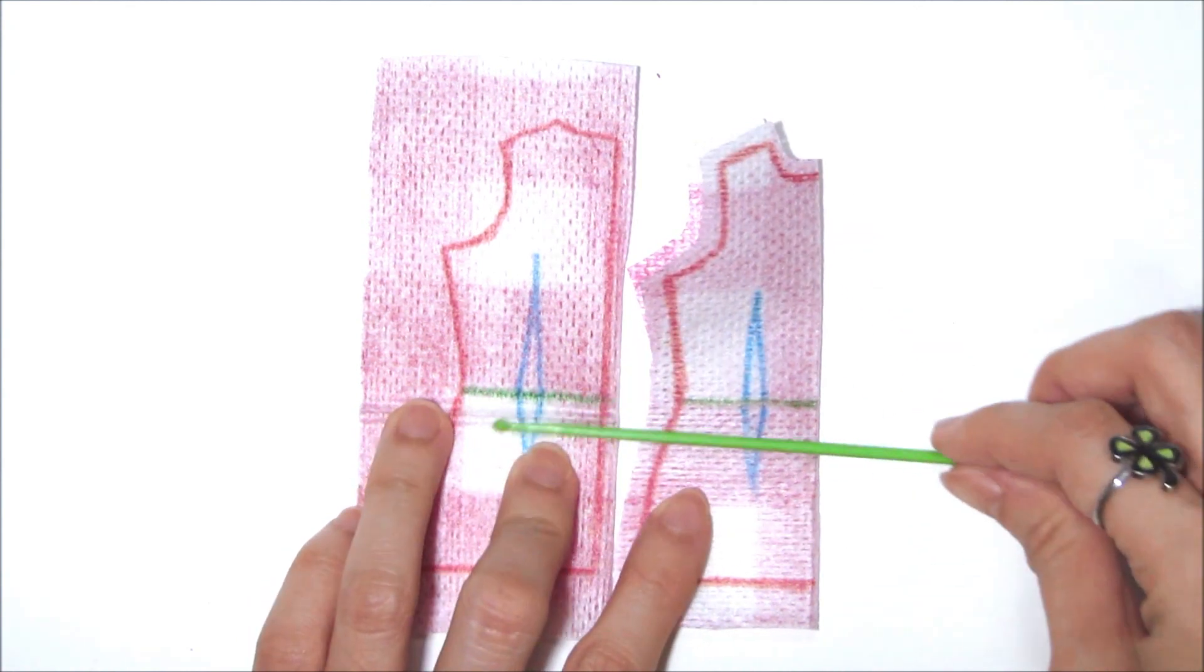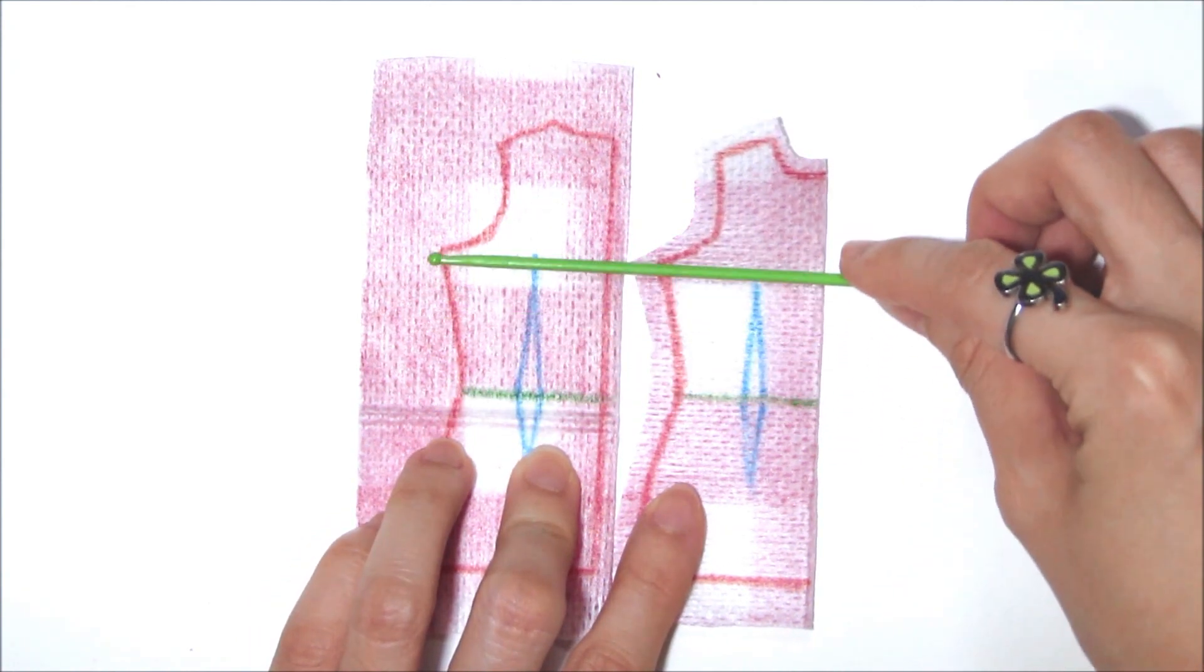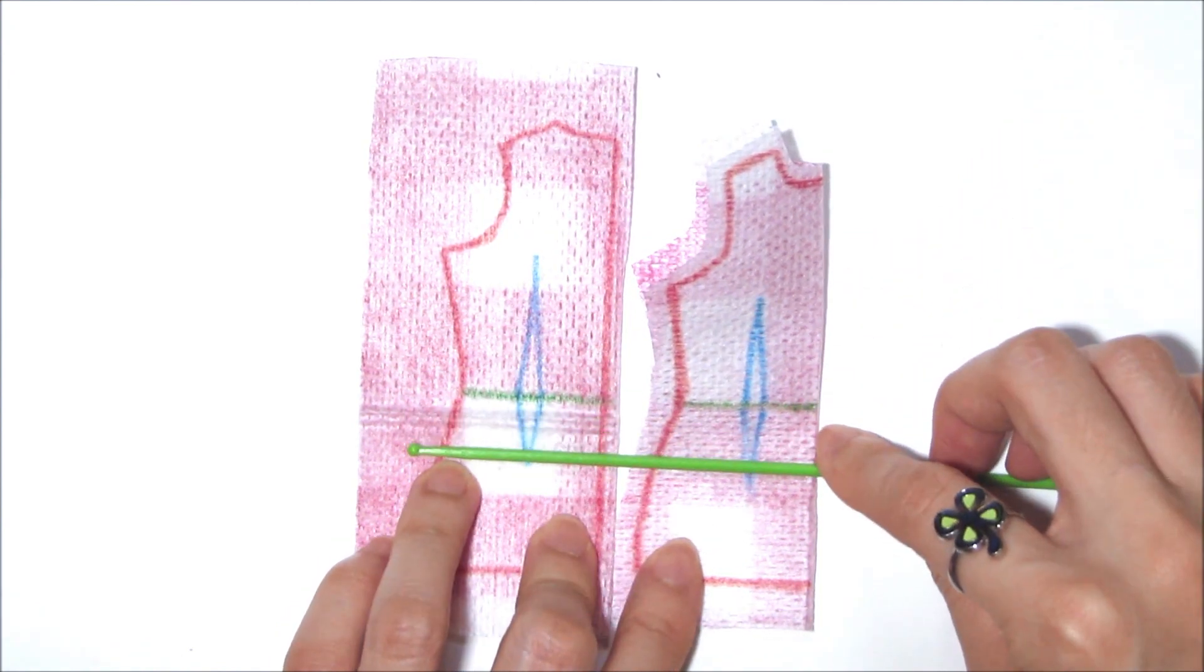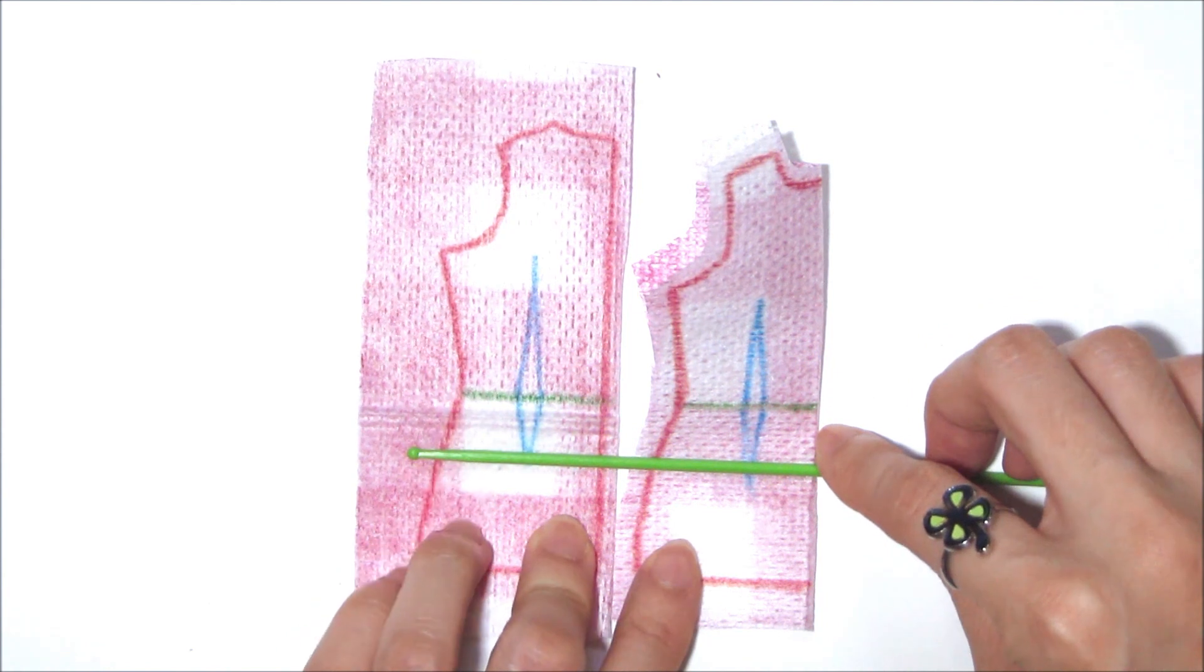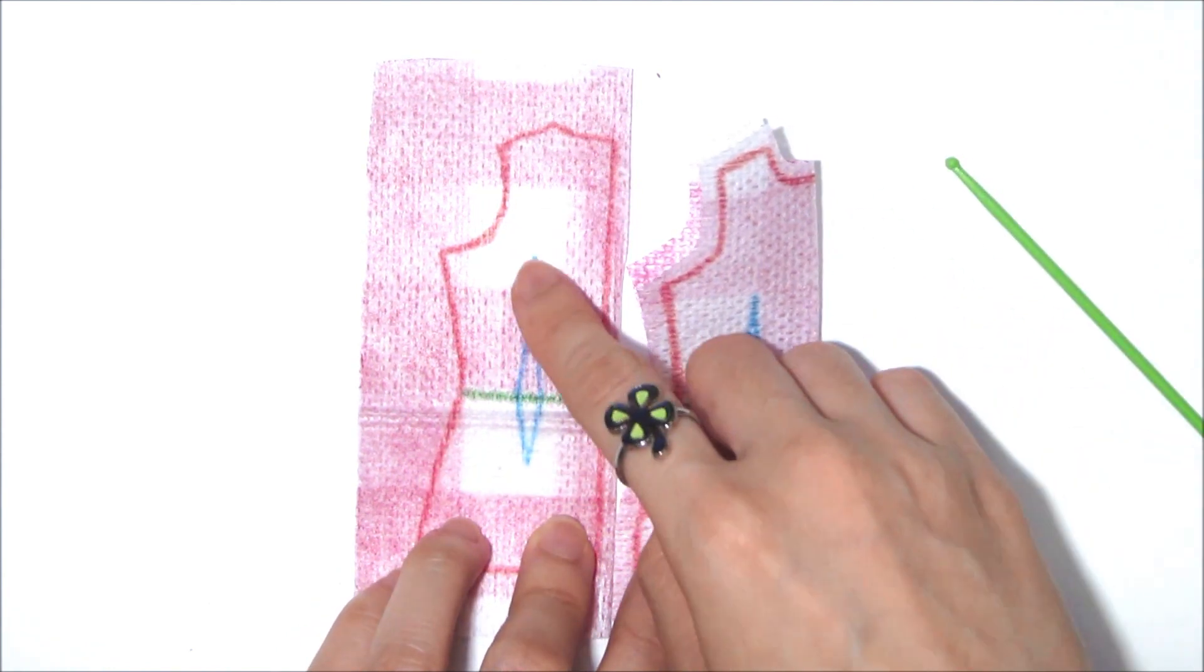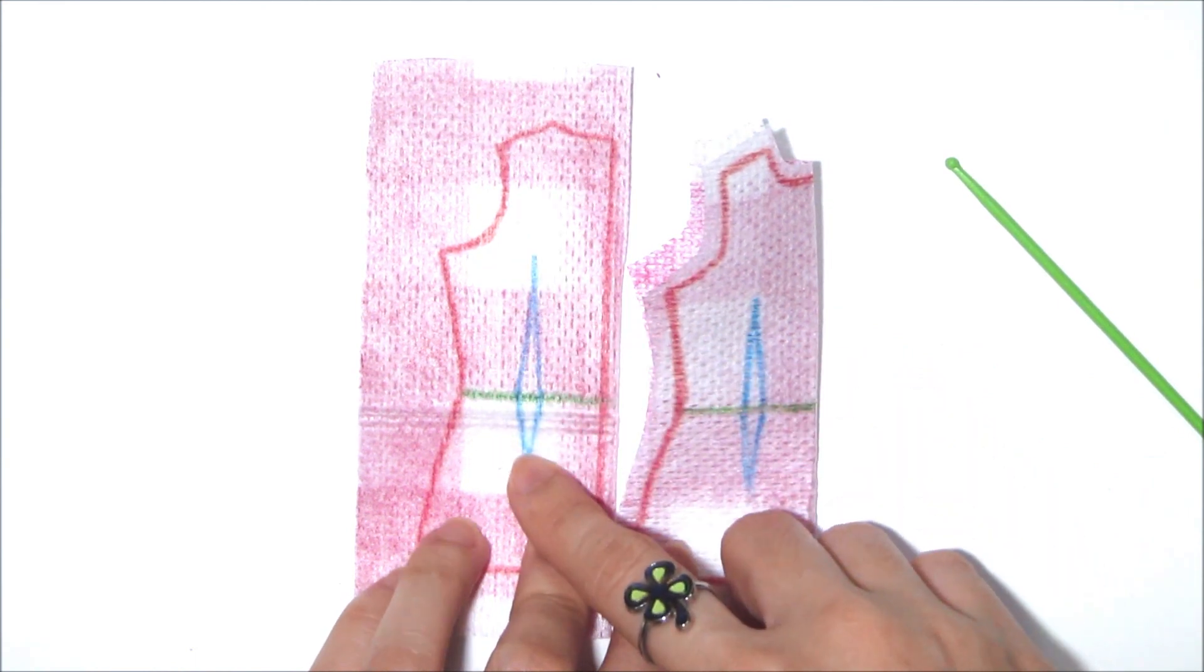And the darts at the back are higher on top and slightly shorter below. So it's higher on top because we don't have our boobs on our back, and we have our butt at the bottom.